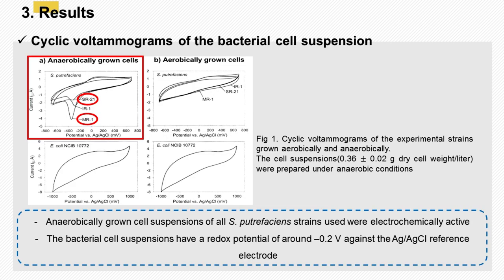Results: cyclic voltammograms of the bacterial cell suspension. Cell suspensions were prepared from cultures made under anaerobic and aerobic conditions to determine their electrochemical activities. Figure 1 shows the cyclic voltammogram of whole cell suspensions of the bacterial strains used. Anaerobically grown cell suspensions of all S. putrefaciens strains were electrochemically active. The wild-type strain MR1 showed the strongest activity, and the strain SR21 showed reduced but significant electrochemical activities. Electrochemical activity was not observed in either suspensions of S. putrefaciens strains grown under aerobic conditions, nor the E. coli cell suspension.